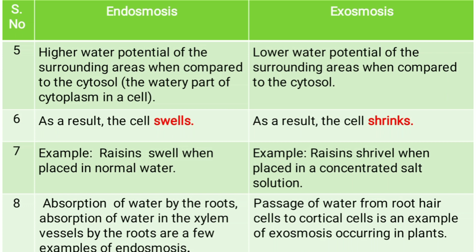When we soak raisins in normal water, they swell — that is endosmosis. In exosmosis, raisins shrivel or shrink when placed in concentrated salt solution — placing them in a concentrated solution causes them to shrivel.